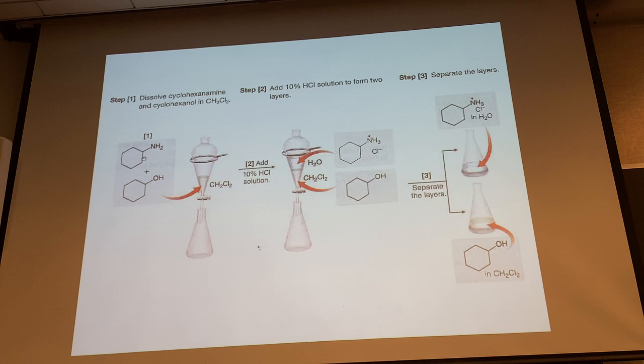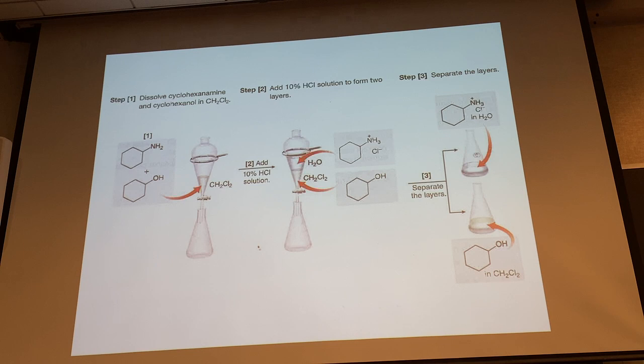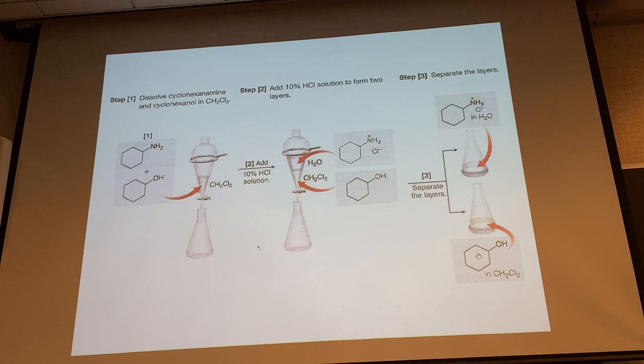We can use amines for extraction purposes. If you have two neutral molecules with similar boiling points, you can separate them by protonating one. The amine has pKa ~9, so acidifying the solution in a separatory funnel converts it to the ammonium salt, which goes into the water layer. The heavier nonpolar solvent — methylene chloride — holds the alcohol. We mechanically separate the layers, then treat the aqueous ammonium salt layer with hydroxide to get the neutral amine back and do another extraction — physically separating compounds based on their ionization states.